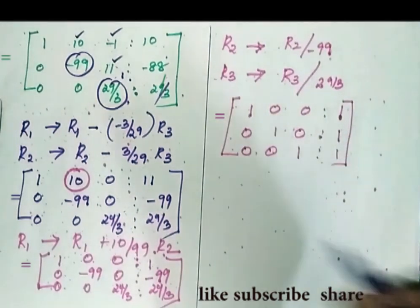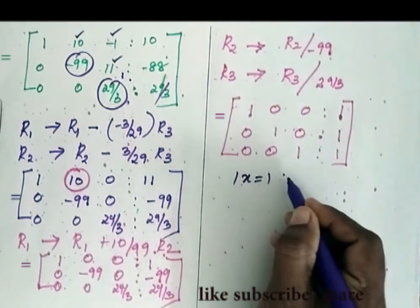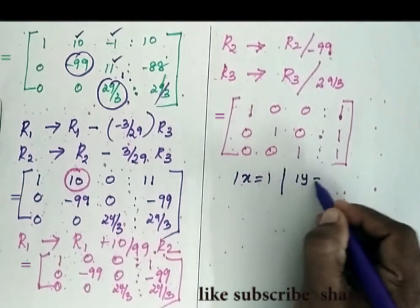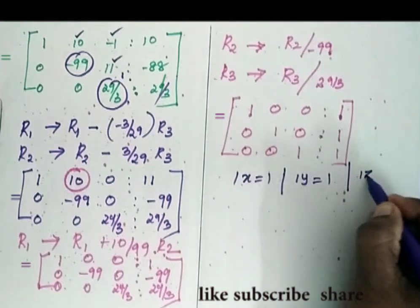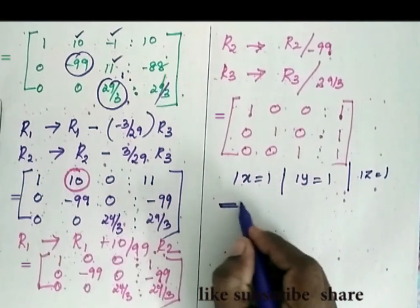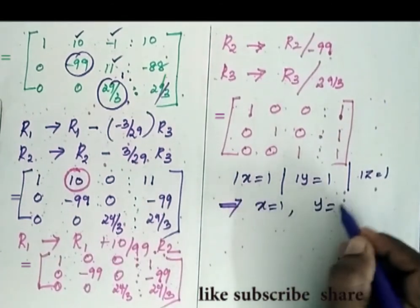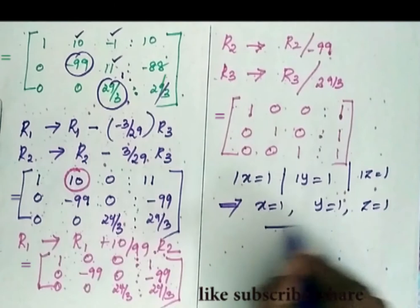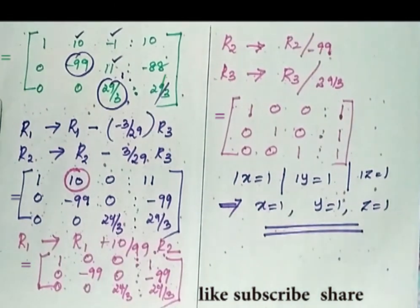So now 1X is equal to 1, 1Y is equal to 1, 1Z is equal to 1. So this implies X is equal to 1, Y is equal to 1, Z is equal to 1.